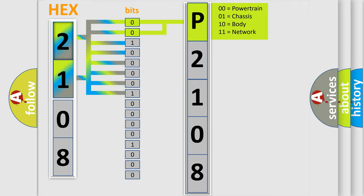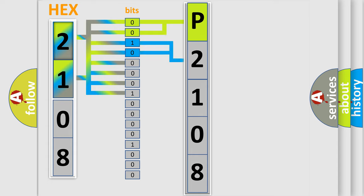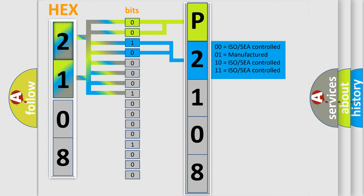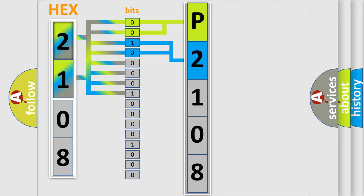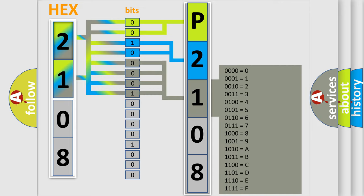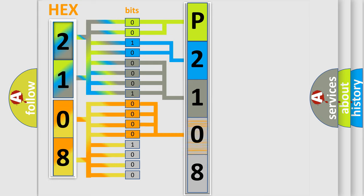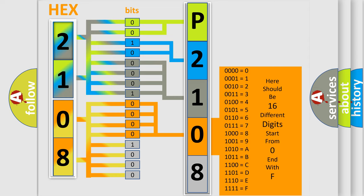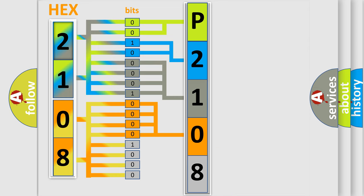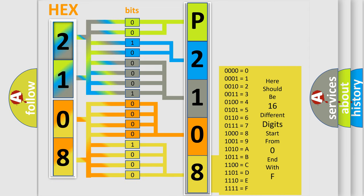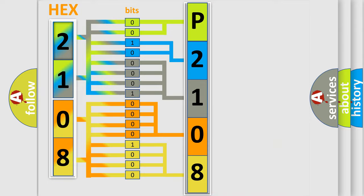The next two bits determine the second character. The last four bits of the first byte define the third character of the code. The second byte is composed of a combination of eight bits. The first four bits determine the fourth character, and the combination of the last four bits defines the fifth character. A single byte conceals 256 possible combinations.